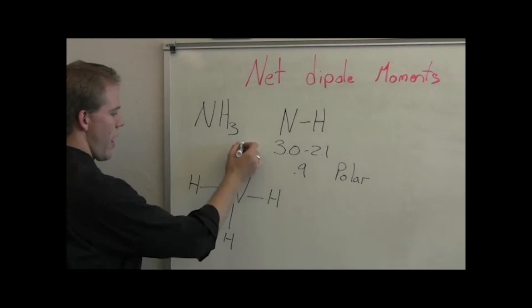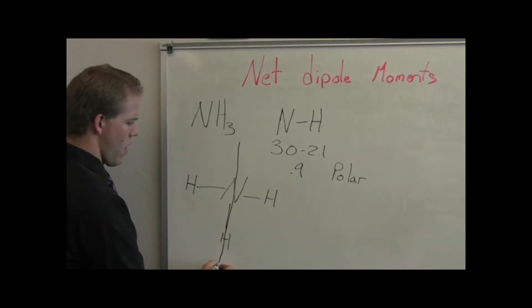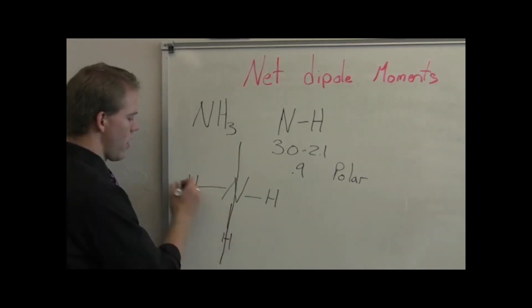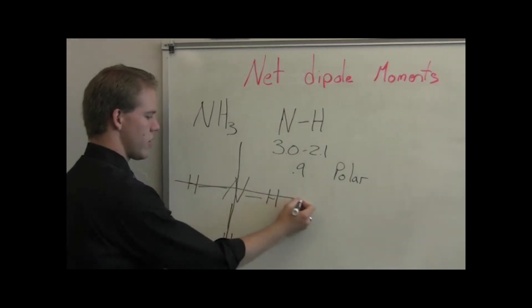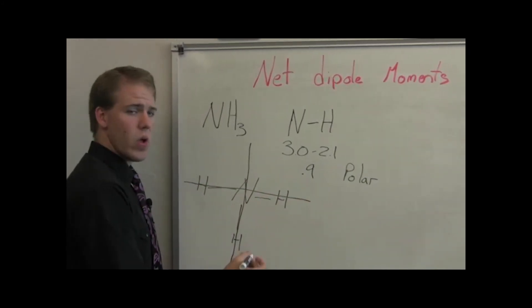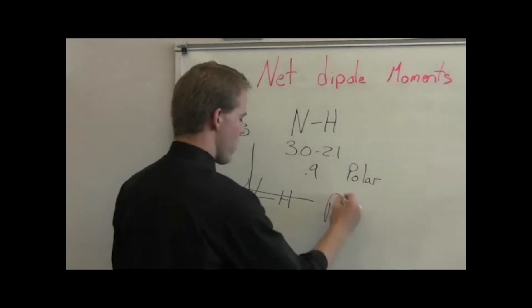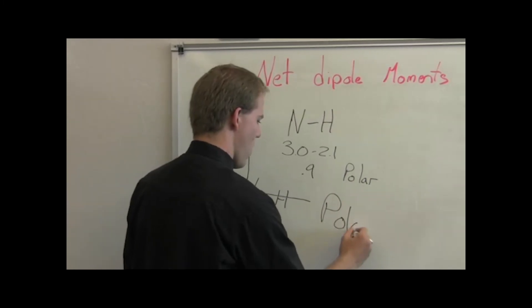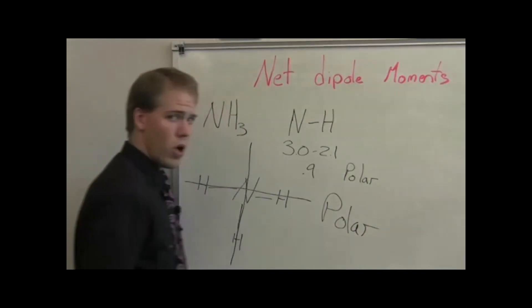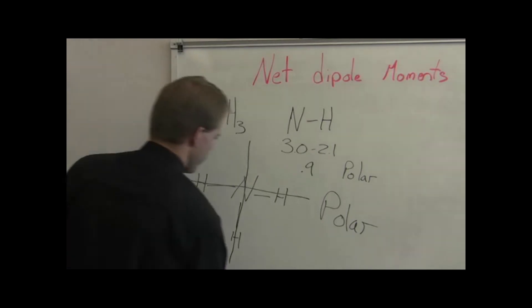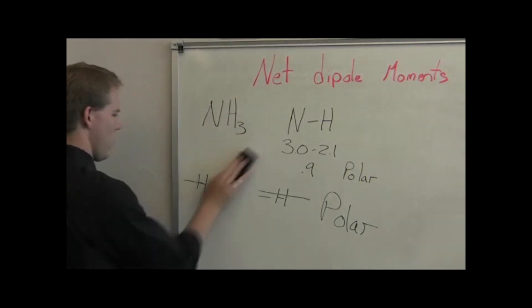We can see if we draw the axis this way, it is symmetrical. But if we draw it across this way, it's not symmetrical. That makes this a polar molecule.